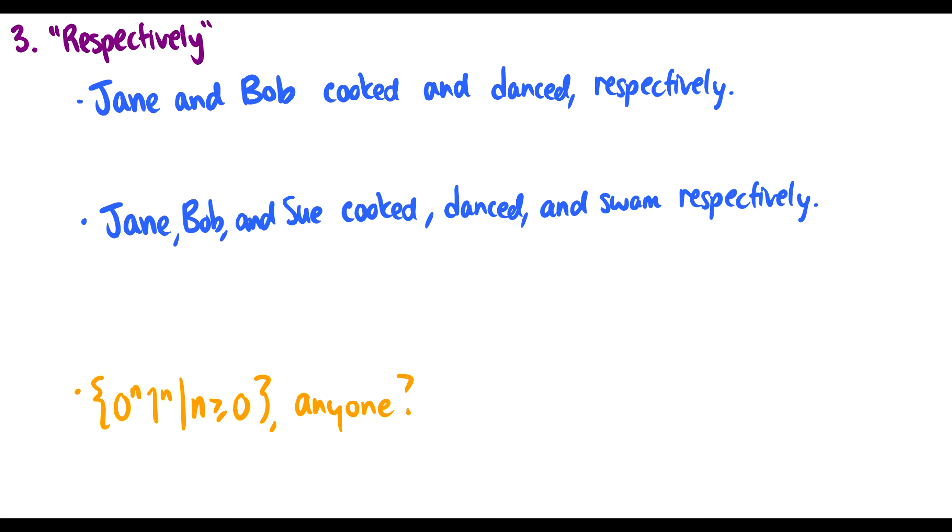Jane and Bob cooked and danced respectively. We have Jane as noun one and Bob noun two. Jane cooked and Bob danced. Respectively means we maintain the order. The first verb links to the first noun, the second verb links to the second noun. We see this cross-serial dependency here. It's cross because we have our lines crossing, and it's serial because it's going in a straight line.